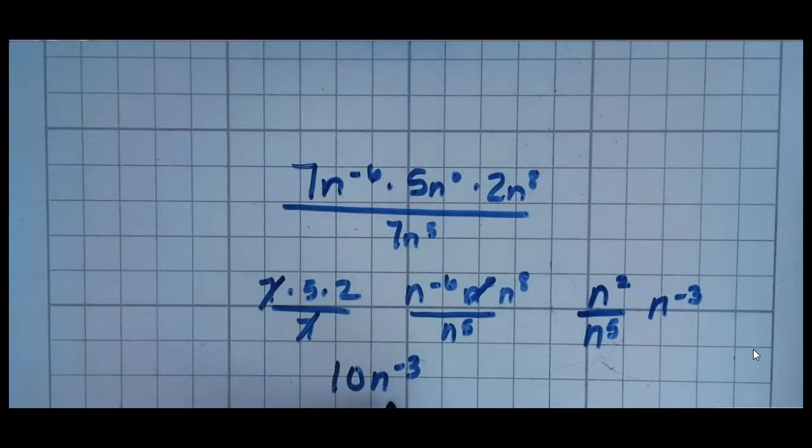And while this is a correct answer, a lot of teachers don't like to see negative exponents. So remember, whenever you have a negative exponent, that just means it's on the wrong side of the line. So 10n to the negative 3rd is simply 10 over n cubed, or n to the 3rd.